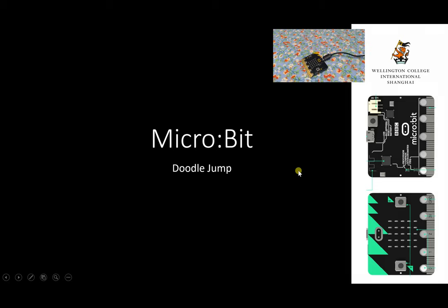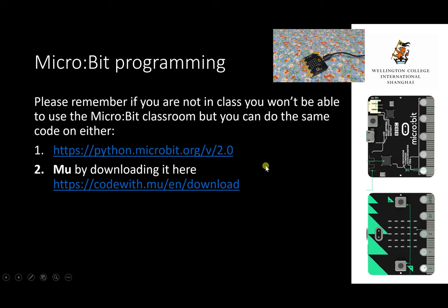This is a walkthrough of how to do Doodle Jump using the micro:bit. You should be able to see in the top right-hand corner that's my micro:bit, so we're going to send the code to that. I have to be honest, my ability to play this is a little bit limited, but we can certainly code it, which is the key thing at the moment.